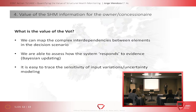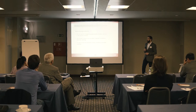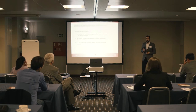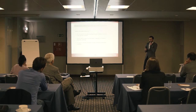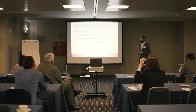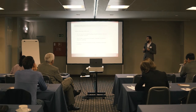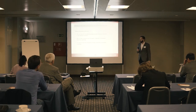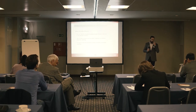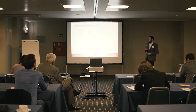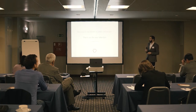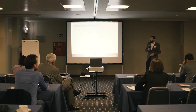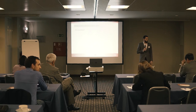What is the value of the value of information? We can map the complex interdependencies and see the different variables affecting our decision scenario, and trace how variations in nodes affect our decision. This is also related to sensitivity of input variation and uncertainty modeling. Using a belief network, we are able to assess how the system responds to evidence. Please look at the fact sheet for more information — the link is provided and will be updated frequently. Thank you very much.